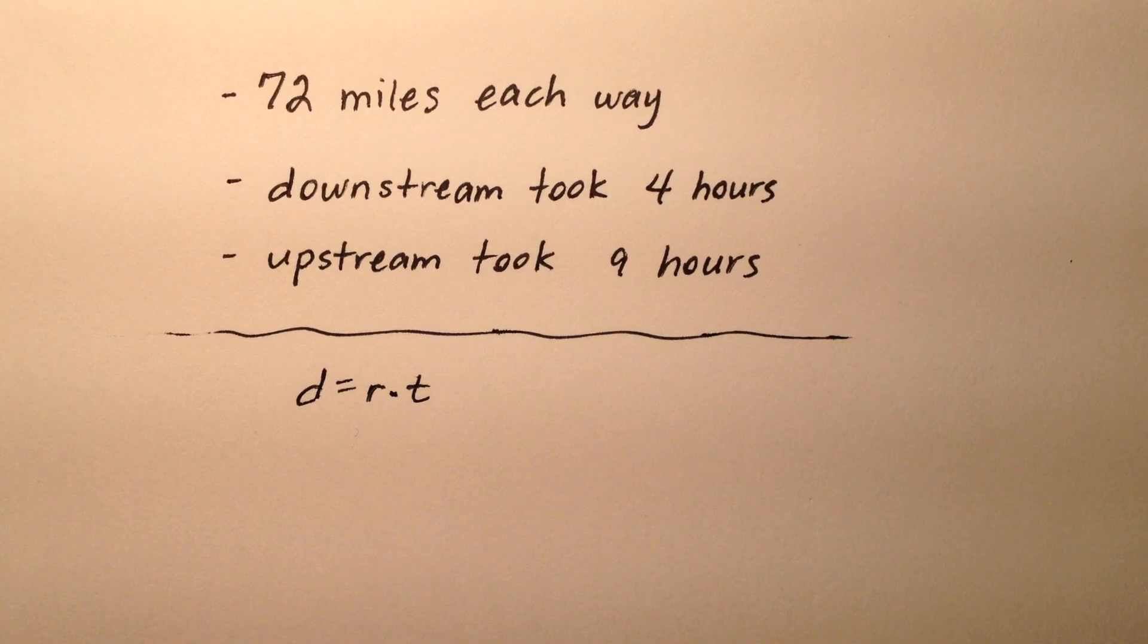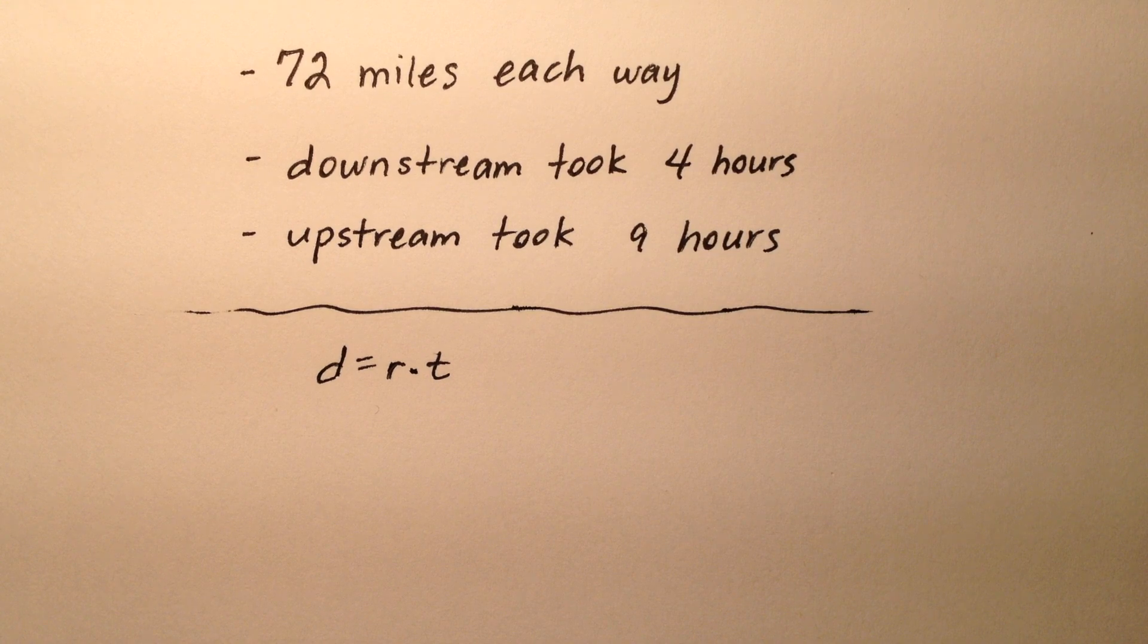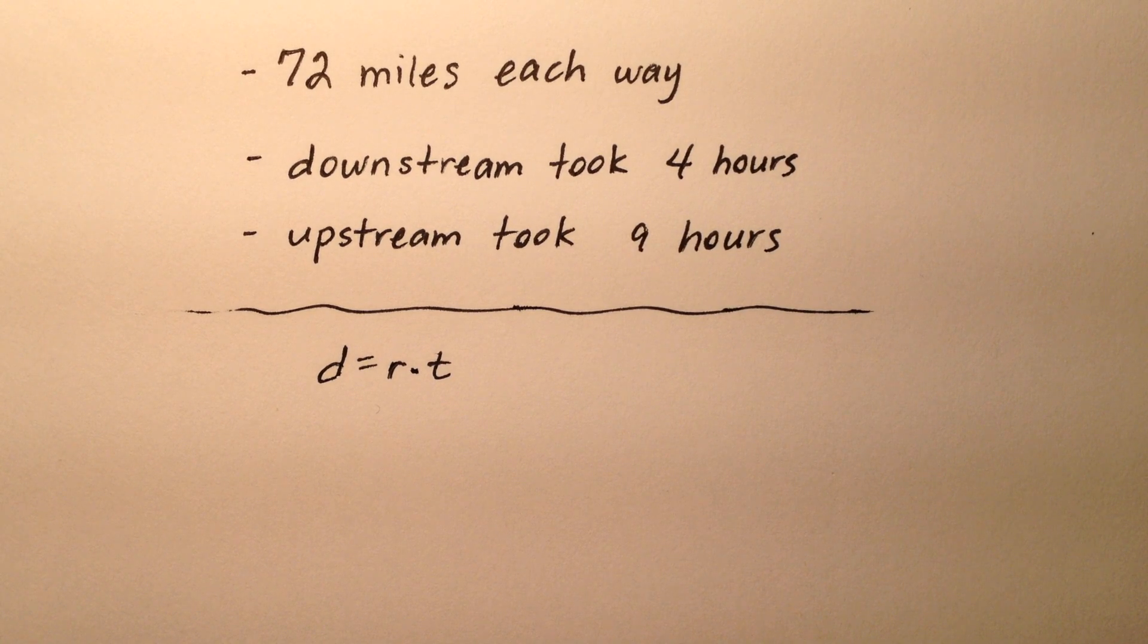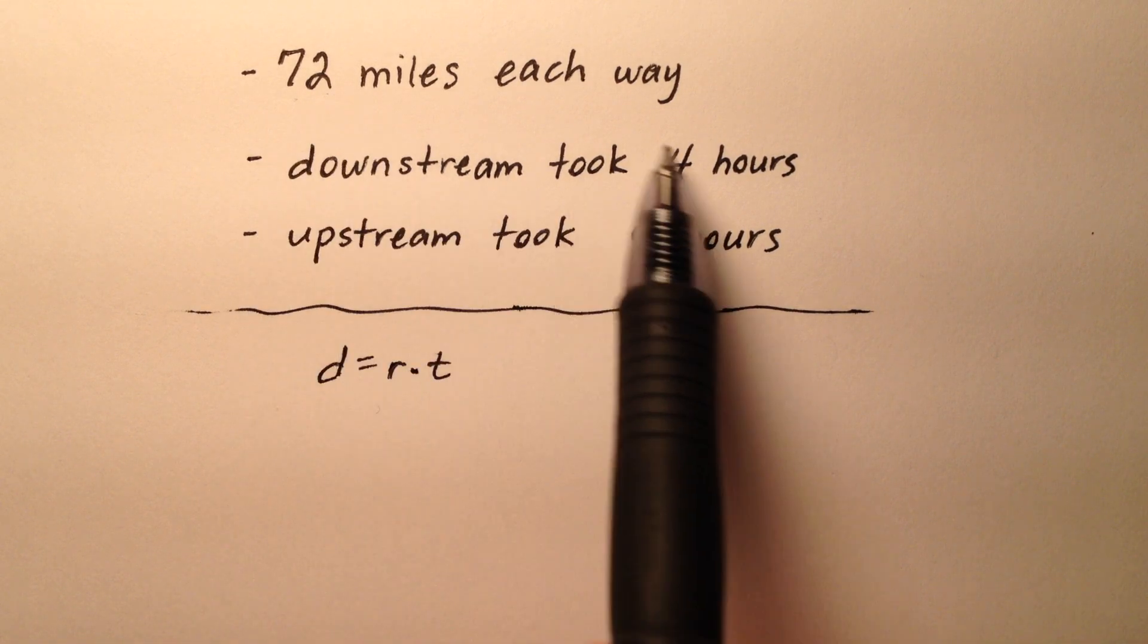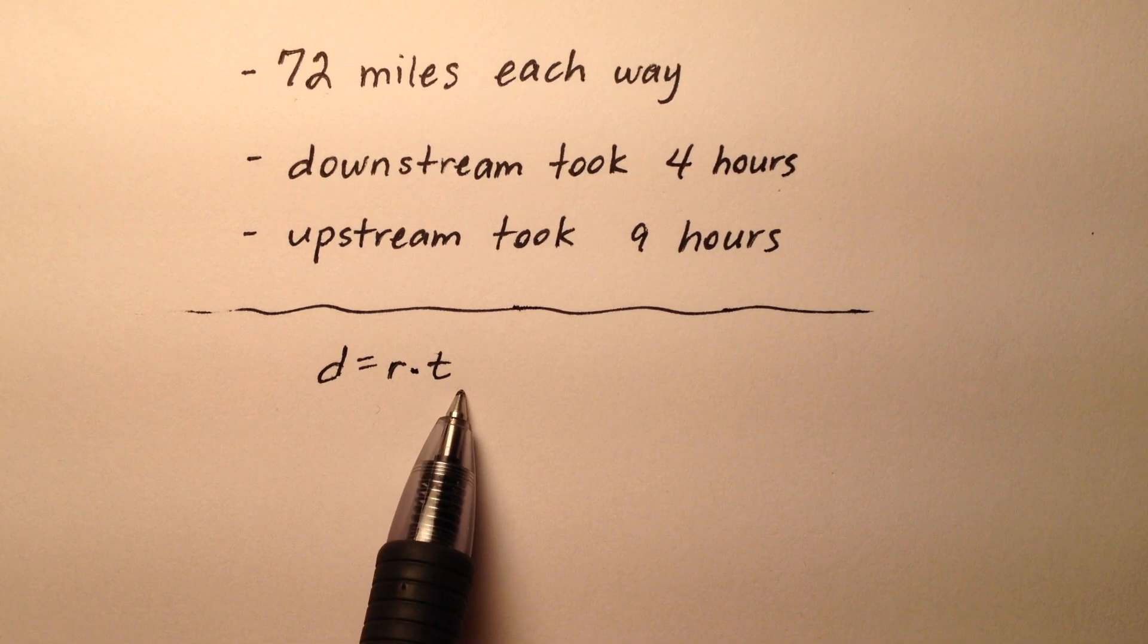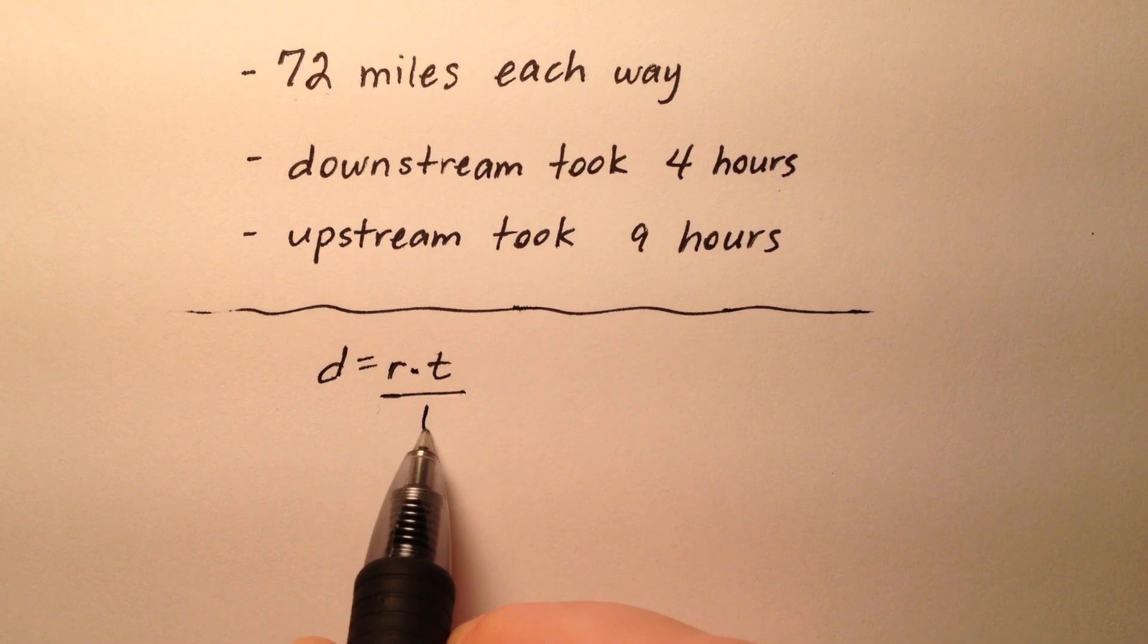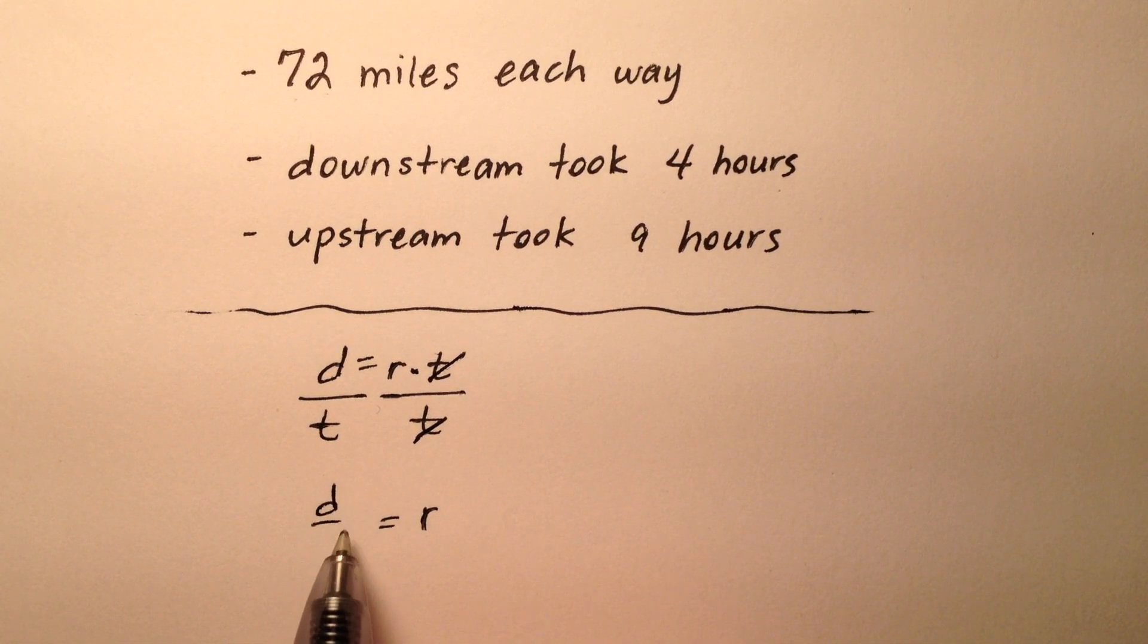So in order to facilitate a process of figuring out the speed of the water, speed of the boat, we need to know what the speed downstream was and the speed upstream. So we know the distance and we know the time. So if we know distance and time, we can divide both sides of this equation by t, and we can solve for the rate.